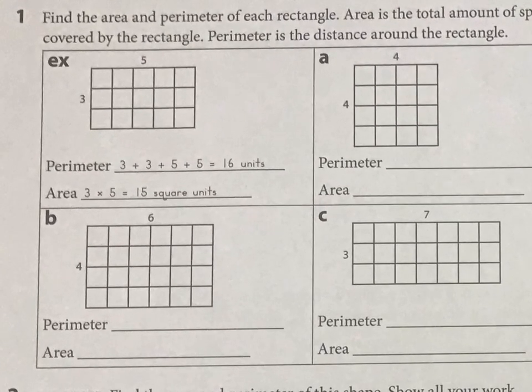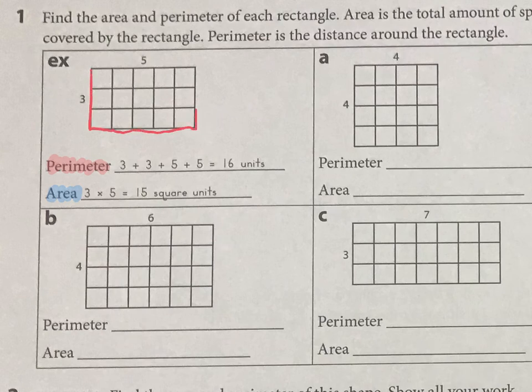So we have some rectangles here, but no matter what the shape is, perimeter is always going to be the distance around a shape. So if you're walking around this shape, that is the perimeter, and the area is going to be the space that the shape takes up.